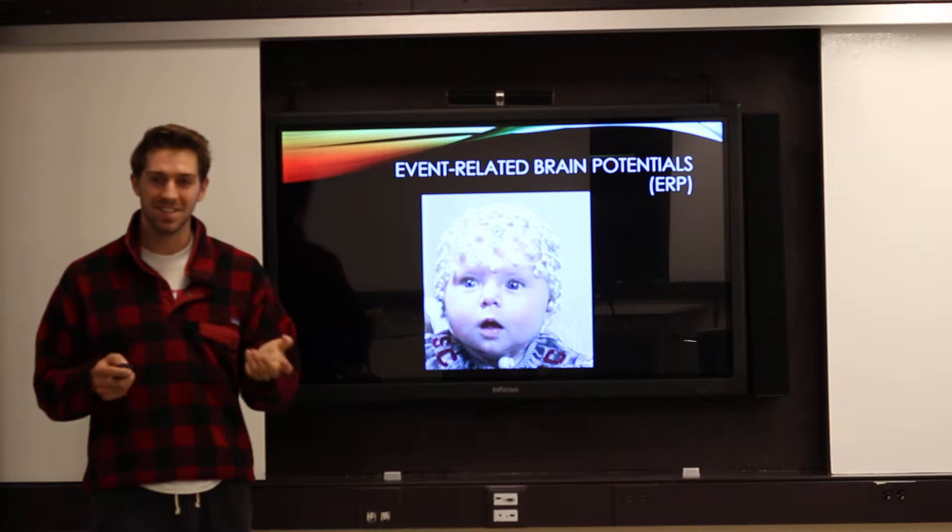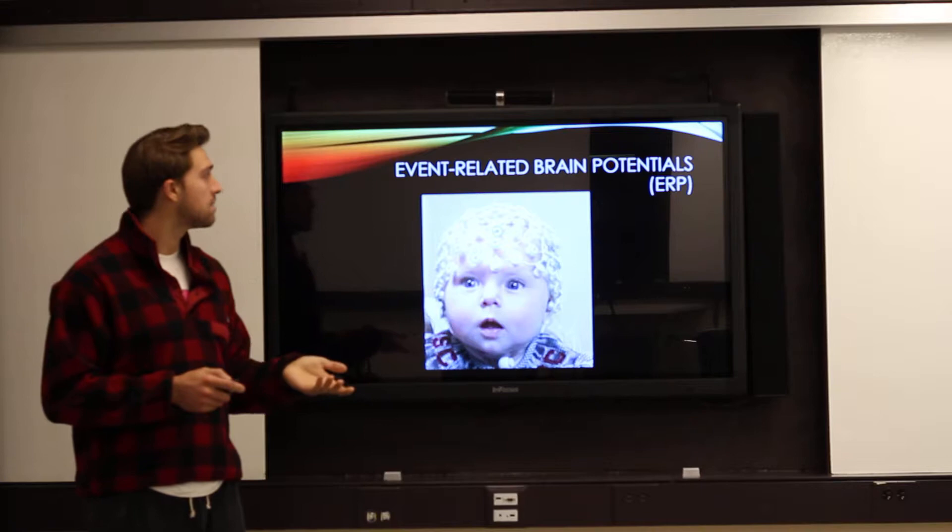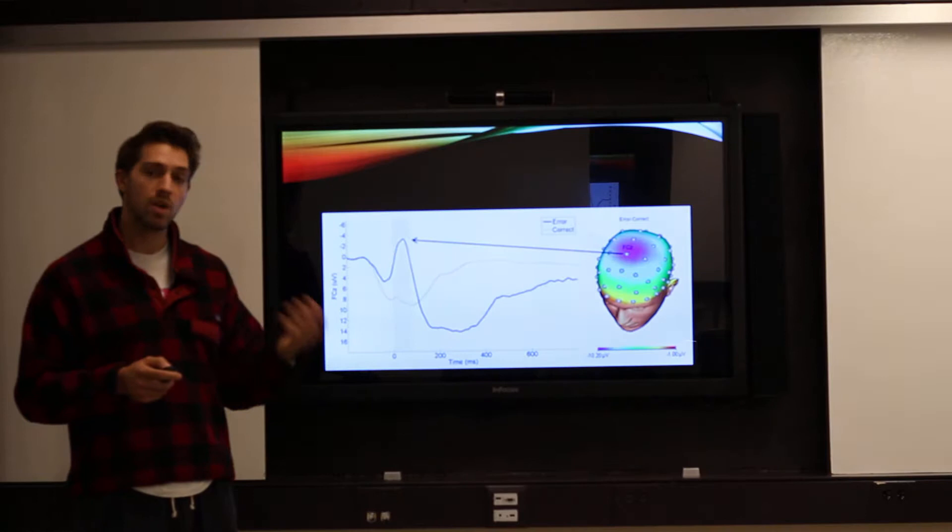Event-related brain potentials occur when you are hooked up to an EEG. Because the brain communicates through both chemical and electrical signaling, we can actually observe the electrical activity in the brain through looking at the fluctuations and the voltages of groups of neurons. This will happen in response to all types of events.